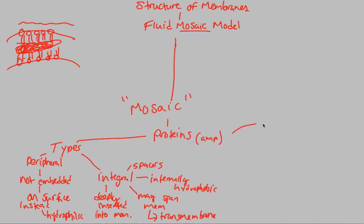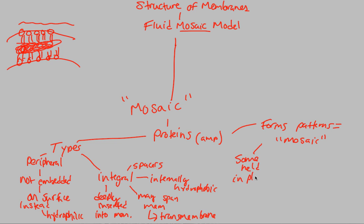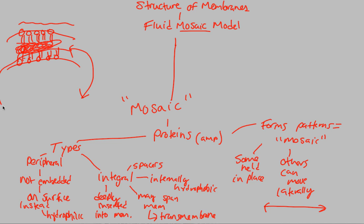The last important idea about proteins is that they form patterns, and this is literally what the mosaic term refers to. Some proteins are held in place — they stay at a specific spot on the membrane. Others can move laterally, meaning they can move side to side on the cell membrane, going around the membrane in that direction.